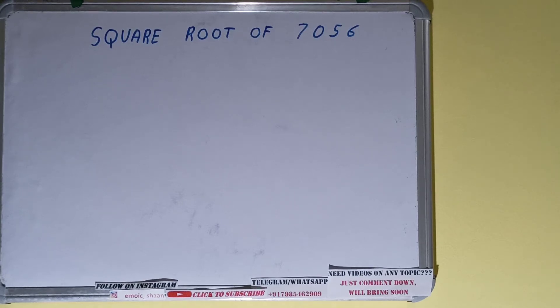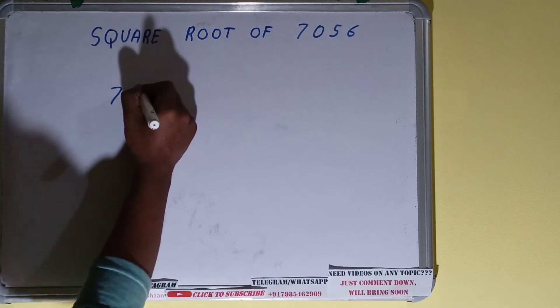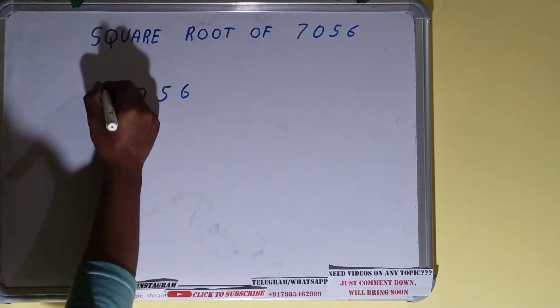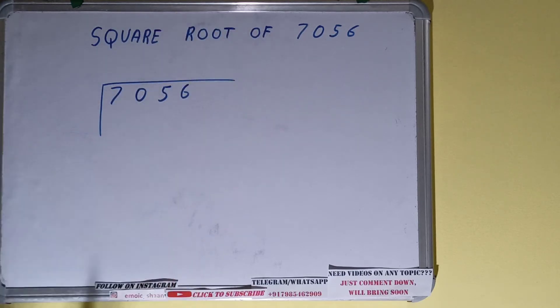Hello friends, and in this video I'll be helping with the square root of the number 7056. So let's start. We'll be using the division method over here for finding out the square root of 7056. So first we need to write the number like this.